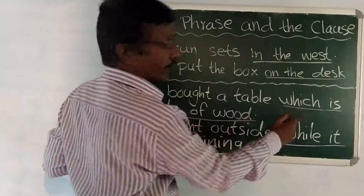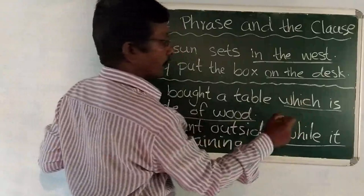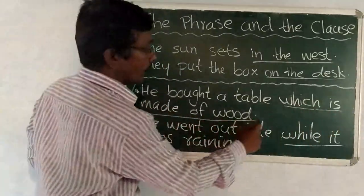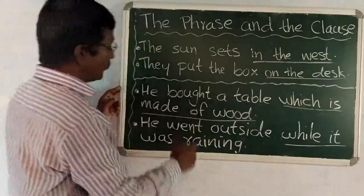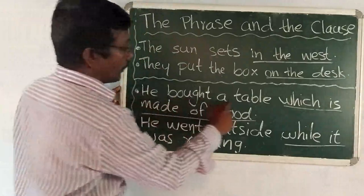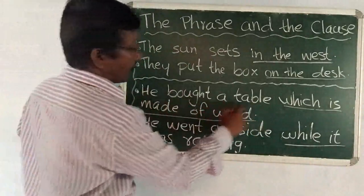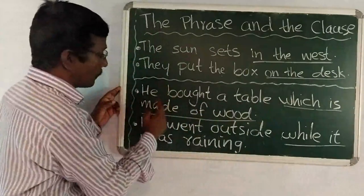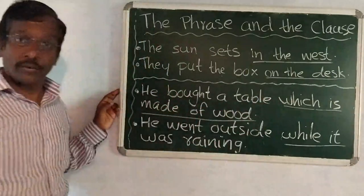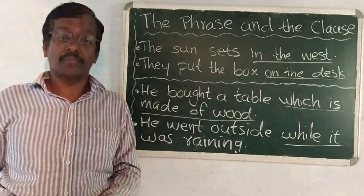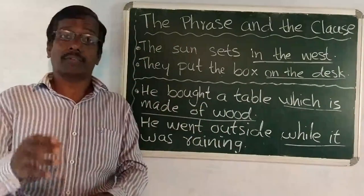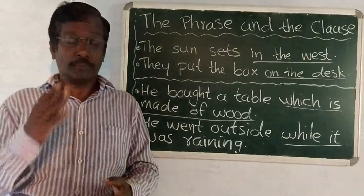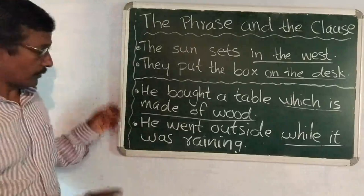In this part of the sentence, we can see 'which' is the subject part and 'is made of wood' is the predicate part. So, 'he bought a table' also gives us complete sense with a subject part and a predicate part. A clause is a group of words which gives us complete sense, and the clause will have a subject part and a predicate part.